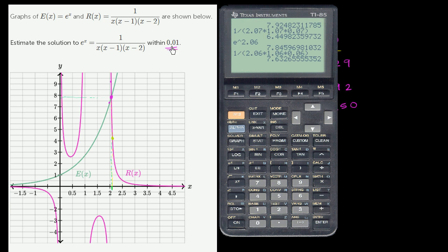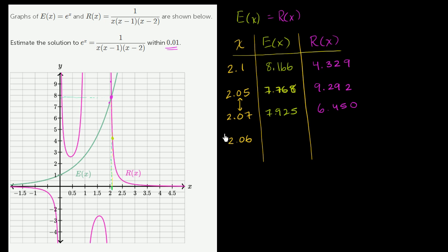But the precision they gave—they don't say that they have to be within each other of that. They say estimate the solution. So there's some actual precise solution right over here, some x value where these are actually equal to each other. That's the x value which gives us this point of intersection. We just have to get within 0.01 of that x value, and 2.06 definitely does the trick.